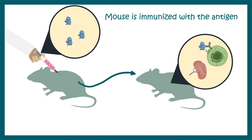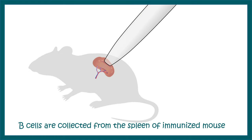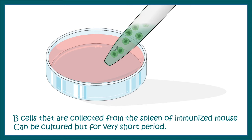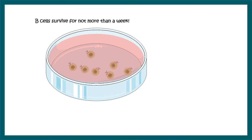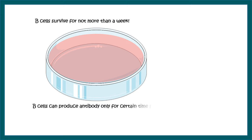Immunizing the mouse would generate B cells in the spleen, as it is a blood-borne antigen. B cells against this antigen would be generated in the spleen. After some days, the B cells generated against that antigen are extracted and need to be cultured. However, there is a fundamental problem: B cells don't survive in culture for more than a week, so we can initially get some monoclonal antibodies but cannot sustain production for long.